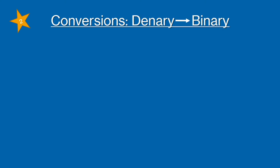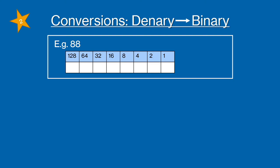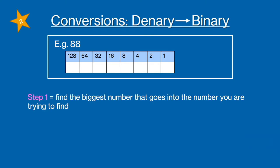Now let's try the opposite and try a conversion between denary to binary. We're going to use 88 as an example to show the steps. So first again you're going to draw your binary table. Then the first thing you're going to do is find the biggest number that goes into the number you're trying to find, so in this case 88.